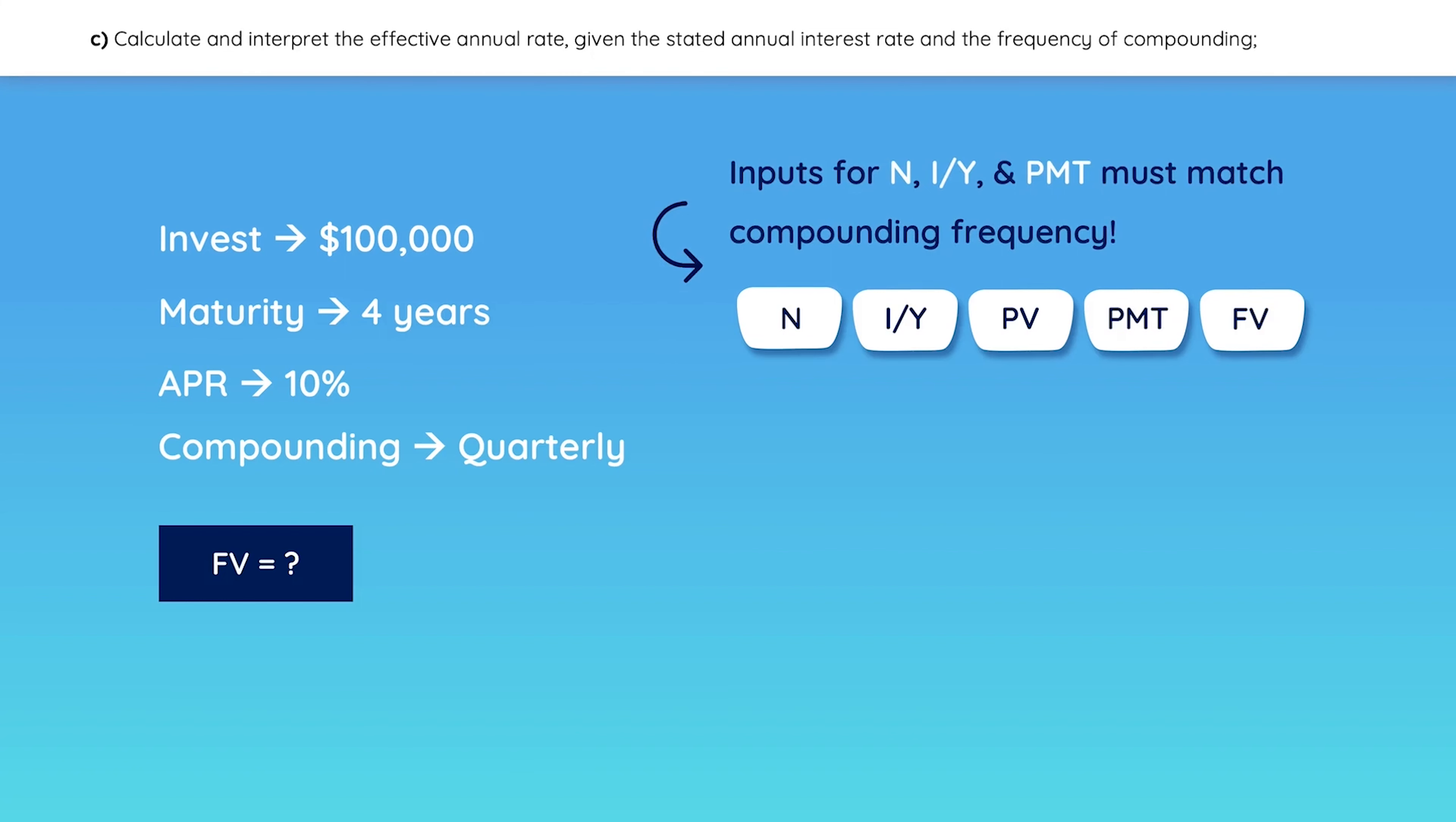Let's start with N, which is the number of periods. And remember that it's not 4 years, it's actually 16 quarters. I is not the annual rate of 10%, but rather the quarterly rate, which is 2.5. Remember to enter the interest rate as a whole number, not a decimal.